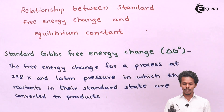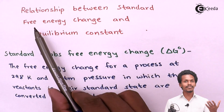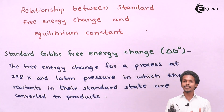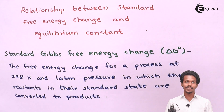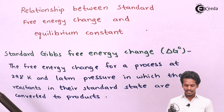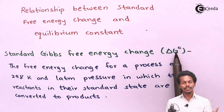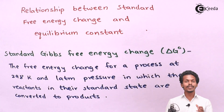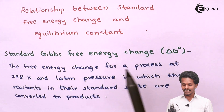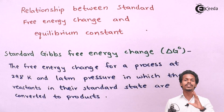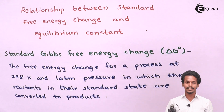Before understanding the relation between them, we should know what standard Gibbs free energy change actually is. Standard Gibbs free energy change is denoted by ΔG°, while ΔG is just the Gibbs free energy change. ΔG° is the standard Gibbs free energy change where all the reactants and all the products are present in a standard state.